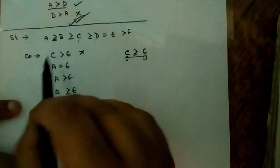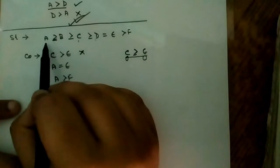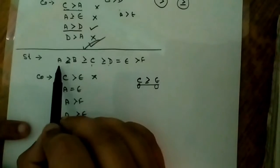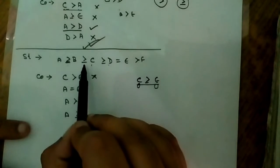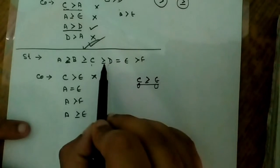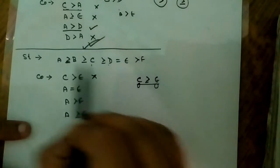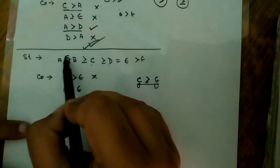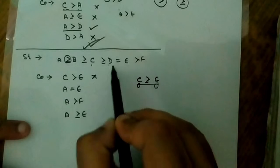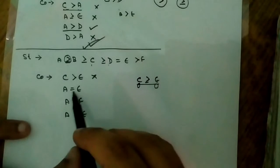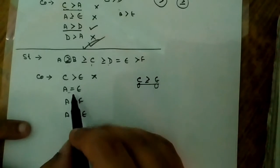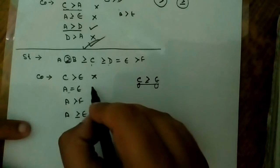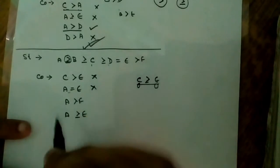Next conclusion: a = e. The chain is a >= b >= c >= d = e. Because the signs used are '>=', we cannot conclude any type of equality between a and e. That is false.